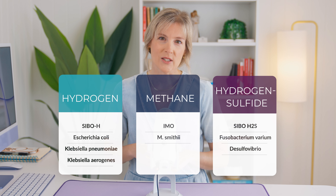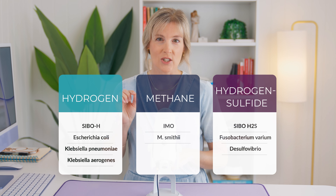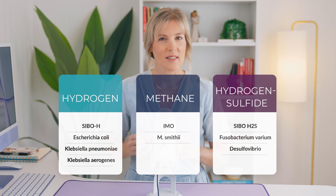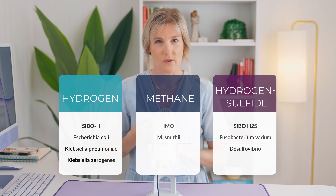The third type of overgrowth is called hydrogen sulfide SIBO, or SIBO-H2S. The bacteria responsible for excess hydrogen sulfide gas were discovered in 2022 — they are Fusobacterium, Barium, and Desulfovibrio. While there is a lot of symptom overlap between the three types, the most common symptom being bloating very soon after eating, what we generally see clinically is that hydrogen gas is often linked with diarrhea, methane gas with constipation, and hydrogen sulfide with a mix of either diarrhea or constipation. The gut is a complex place.